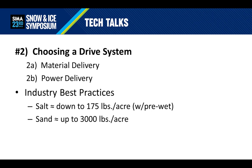If bulk salt is the main material to be used, you're probably treating accounts in a decent-sized city where the main focus is safety — which means getting the black pavement. Industry best practices using a pre-wet salt suggest you need to spread as low as 175 pounds per acre, but a typical application rate is around 500 pounds per acre.